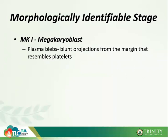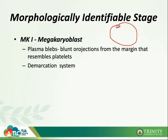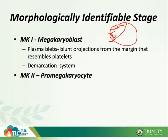Your MK1 or megakaryoblast has plasma blebs — blunt projections from the margin that resemble platelets. You can already see your demarcation system, which are like cutout lines within the cytoplasm that will be shed off as mature platelets. These demarcation lines mark where individual platelets will separate from the megakaryocyte.